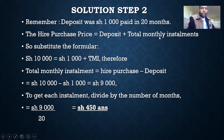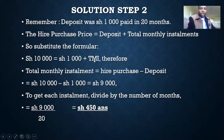We substitute into the formula: hire purchase equals deposit plus total monthly installments. In the place of hire purchase we put 10,000, and in the place of deposit we put 1,000. So 10,000 equals 1,000 plus total monthly installments. To get the total monthly installments, we subtract the deposit from the hire purchase price, and we are left with 9,000.